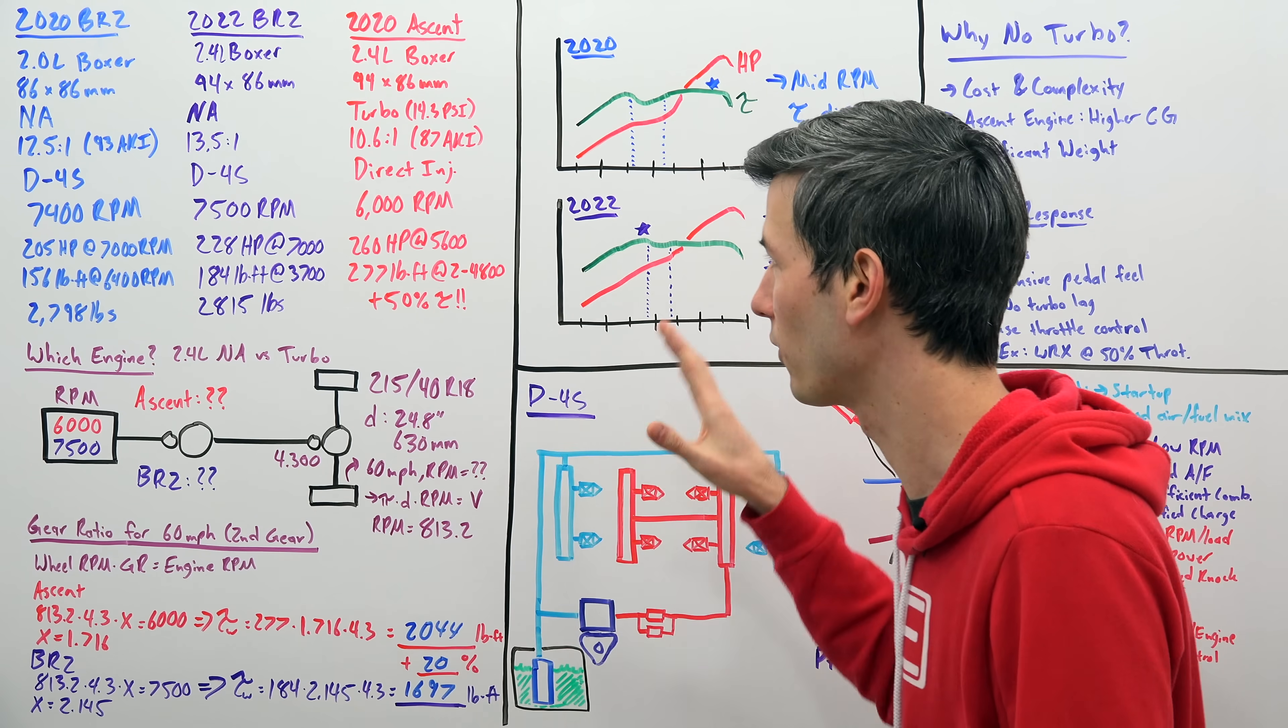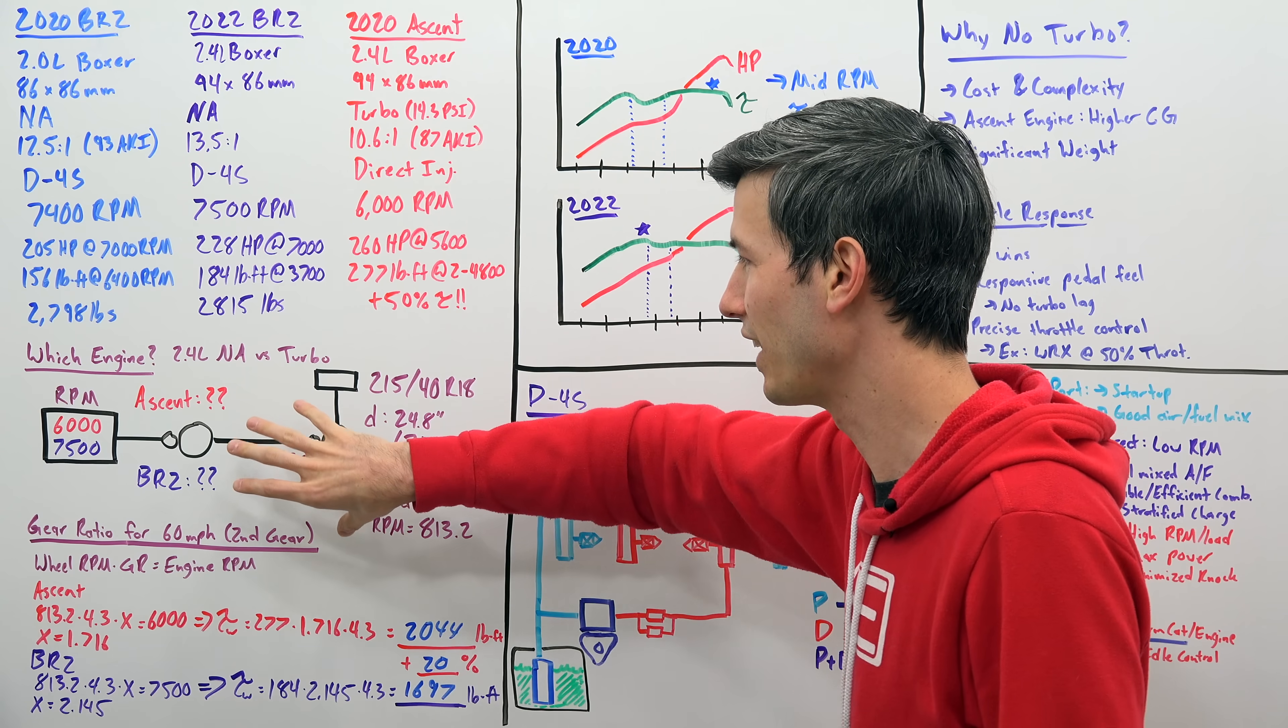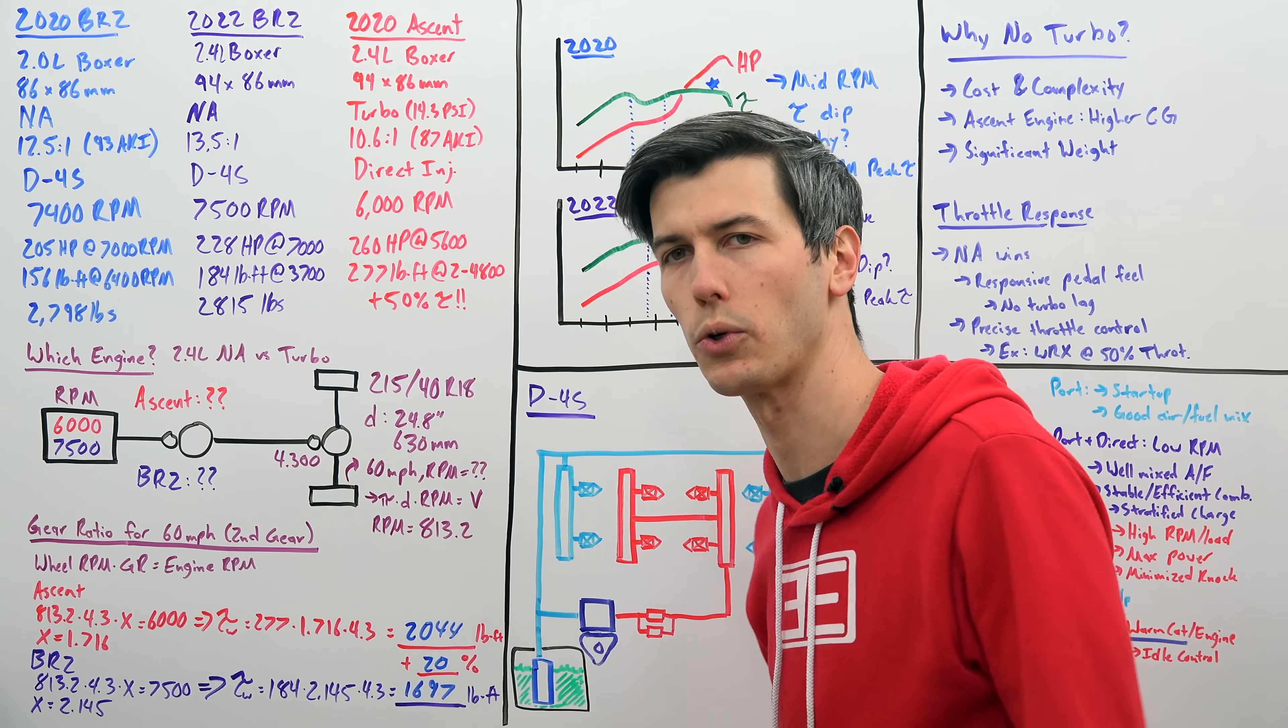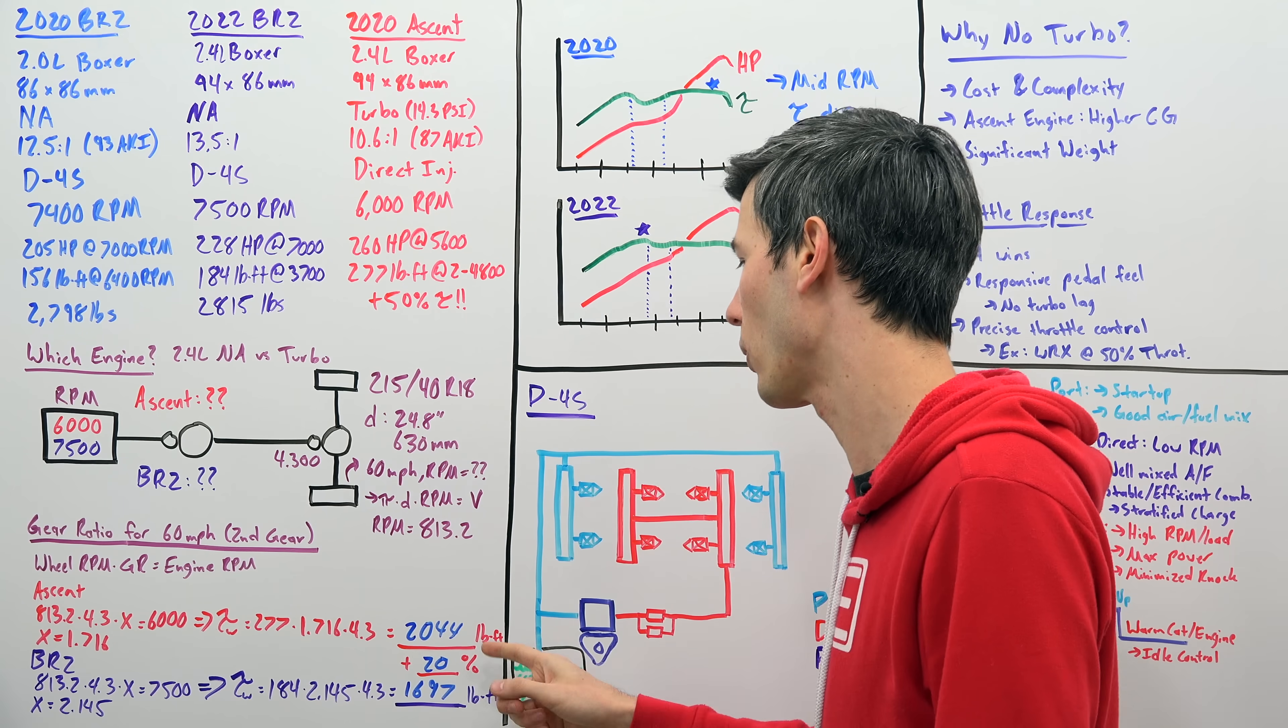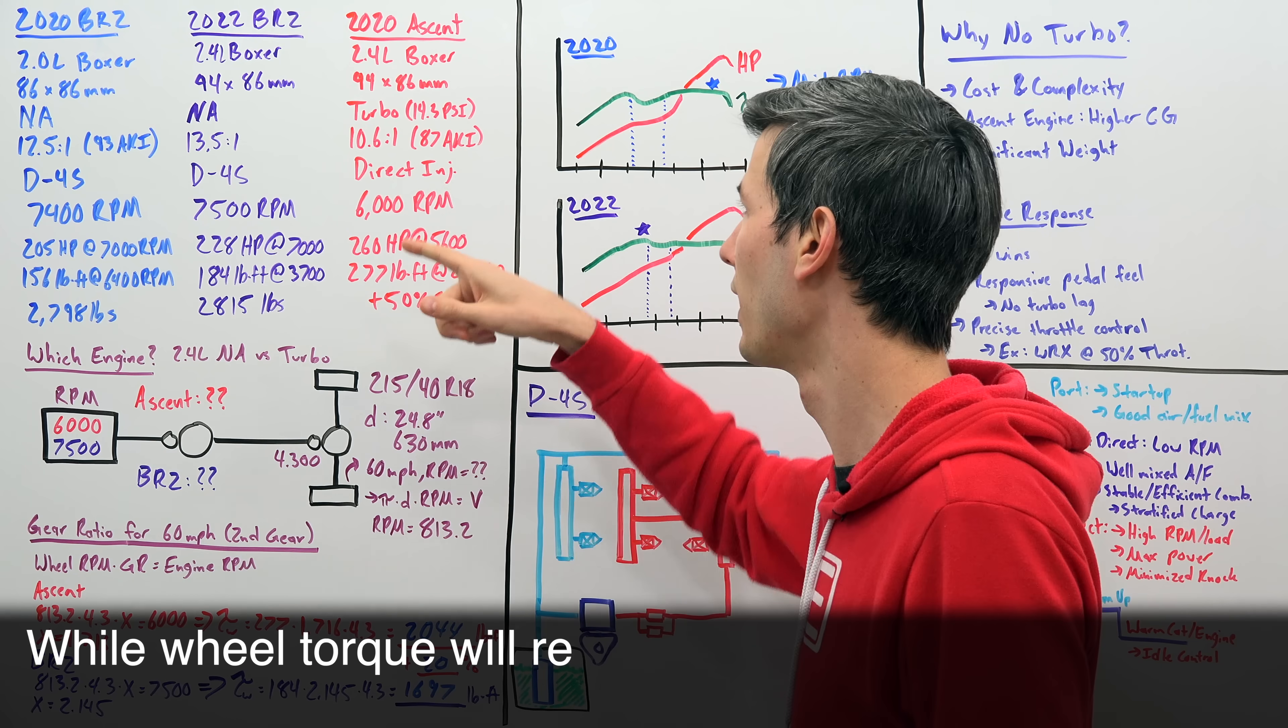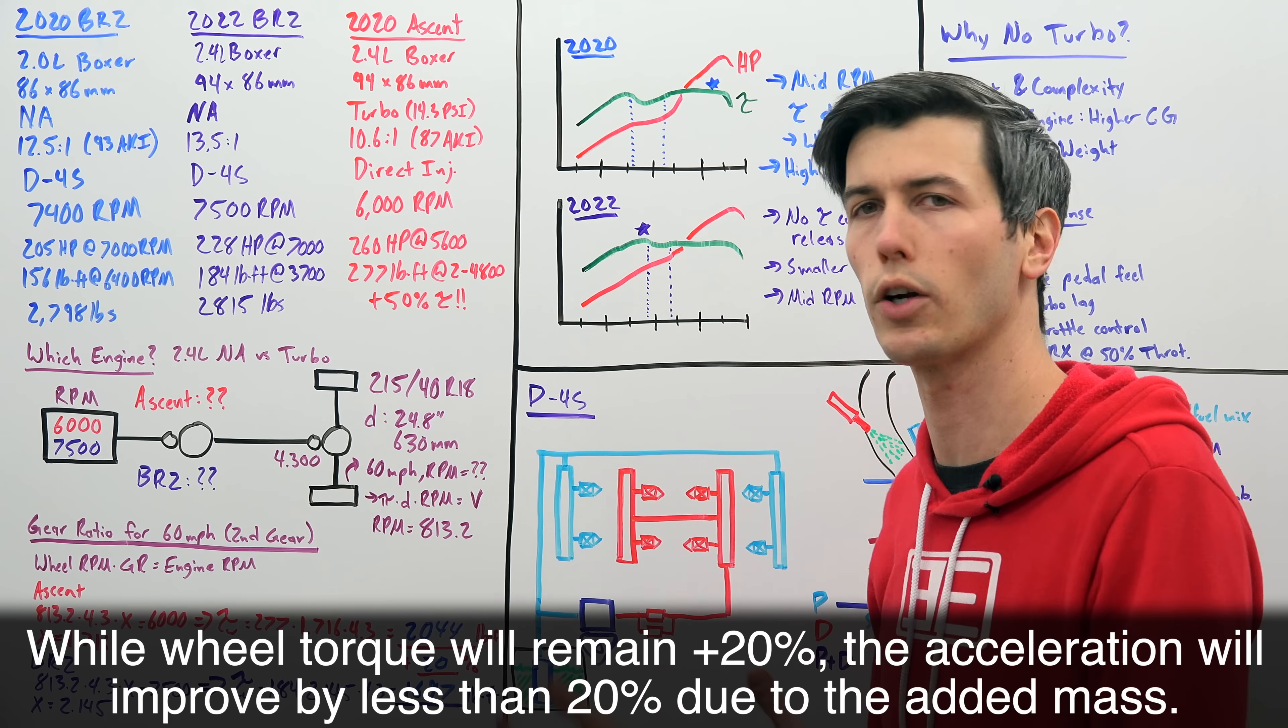Now the other thing to keep in mind, if we were to put this 2.4 liter turbo engine in the BRZ, it would have an advantage, 20% more wheel torque. Great, that sounds good. But also we're going to add weight. So it's not even 20%. It's probably going to be less than 20% because we have to add in weight in order to have this heavier turbocharged engine with the intercoolers and the turbo, that kind of stuff. If you have to compensate for that added torque with bigger brakes, bigger driveline components, that sort of thing.